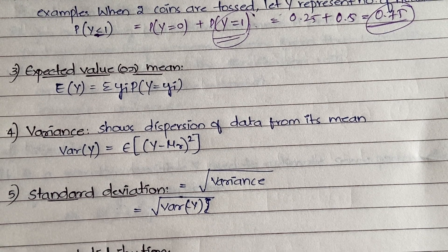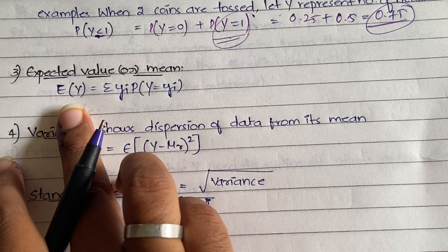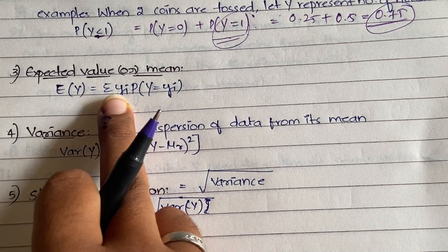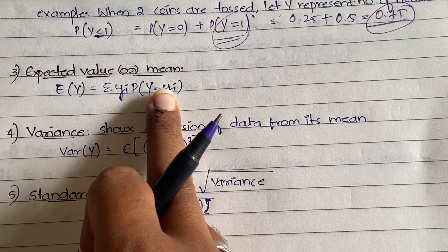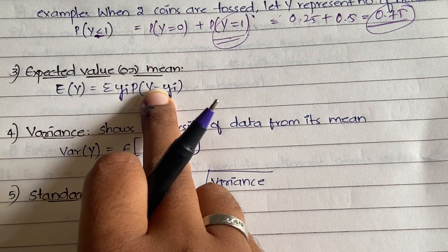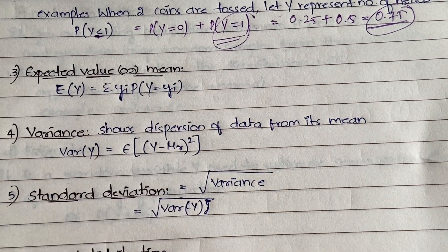The third definition is expected value or mean. Mean is calculated by adding all values and dividing by the number of values. Here E(y) = Σ yi × P(y = yi). So you multiply each random variable value by its probability distribution and sum them all up. That gives you the mean.